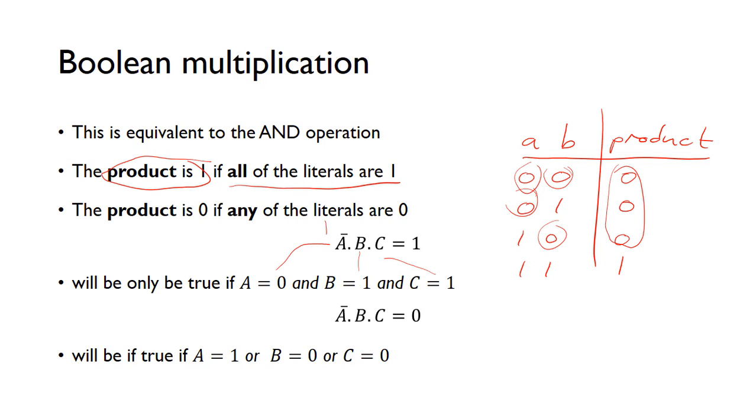But for this case of NOT A AND B AND C being equal to 0, there's lots of different cases when that can be true. If C is a 0, this will be true. It doesn't really matter what A or B are if C is a 0, for example. If B is 0, it doesn't matter what C or A is, it will force this expression to be 0. The same if A is 1, NOT A will be 0, so it doesn't matter what B or C is. So any case where A is 1, B is 0, or C is 0, this multiplication will give us 0.